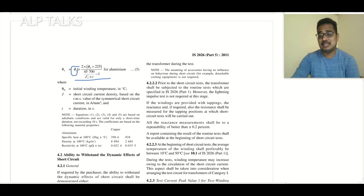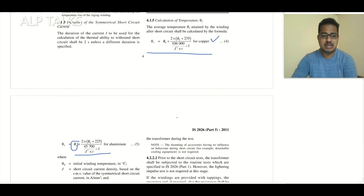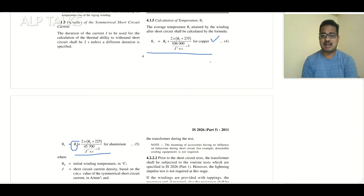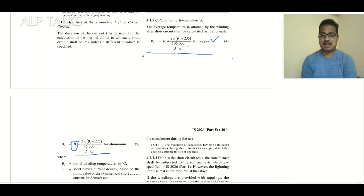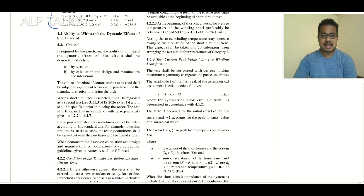In this formula, θ_naught is the initial temperature, j² is the current density during short circuit conditions, and t is the duration. This checks whether the conductor will melt if that much current flows — it is for thermal assessment, not dynamic. Both designers and customers can use it to assess whether the chosen conductor cross-section is correct.